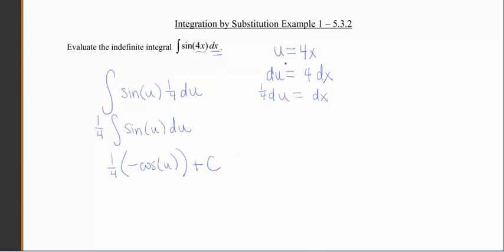So now all we need to do now is just take our u and plug it back in. So our final answer here is going to be negative 1 fourth, because I like those two things to go together a little bit better, cosine of 4x, plus c.